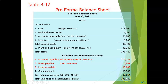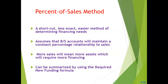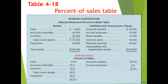Based on that, we can sum our entire balance sheet. Next, we will look at the percentage of sales method — a shortcut and easier method of determining our financing needs. It assumes that balance sheet accounts will maintain a constant percentage relationship with sales, so more sales will also mean more assets, which require more financing. We can summarize by using the Required New Funds (RNF) formula.